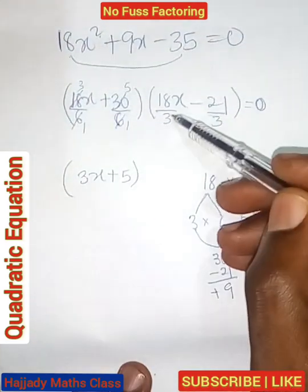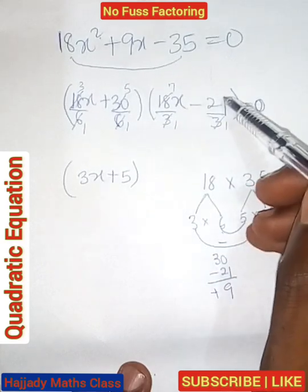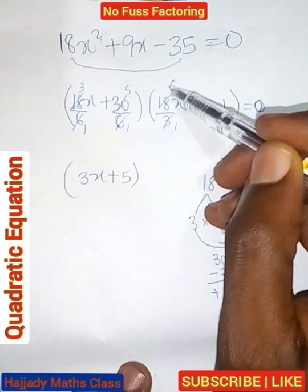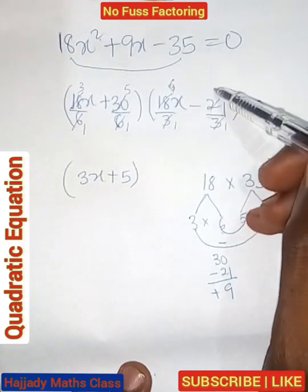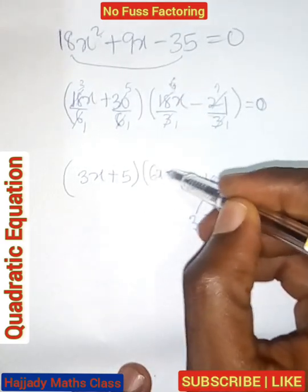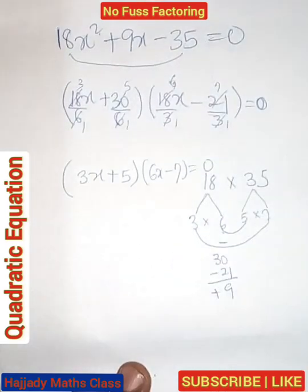And in this, 3 into 1, 3 into 7, 3 into 1, sorry please, 3 into 1, 3 into 6, 3 into 1, 3 into 7. So we are left with 6x minus 7 equals 0.